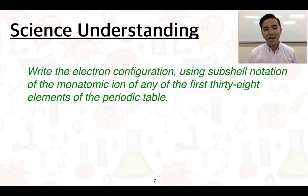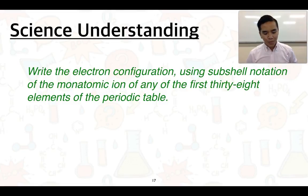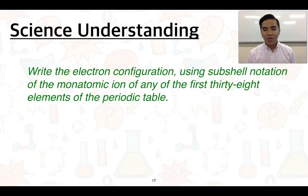The next part and understanding is to learn how to write the electron configuration using subshell notation of any monatomic ion in the first 38 elements of the periodic table. We could expect you to do that given the formula of the ion, or we might even get you to predict what the charge is first and then work out the electron configuration.